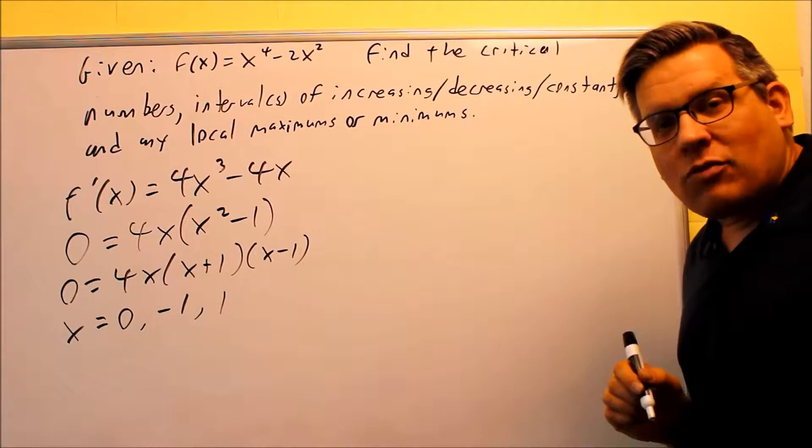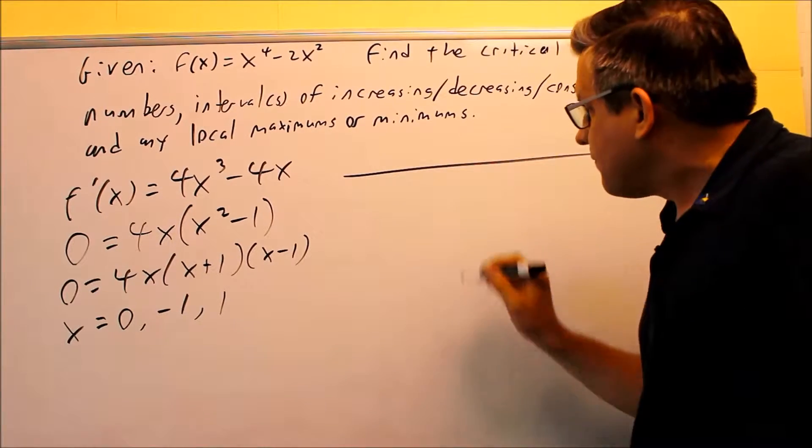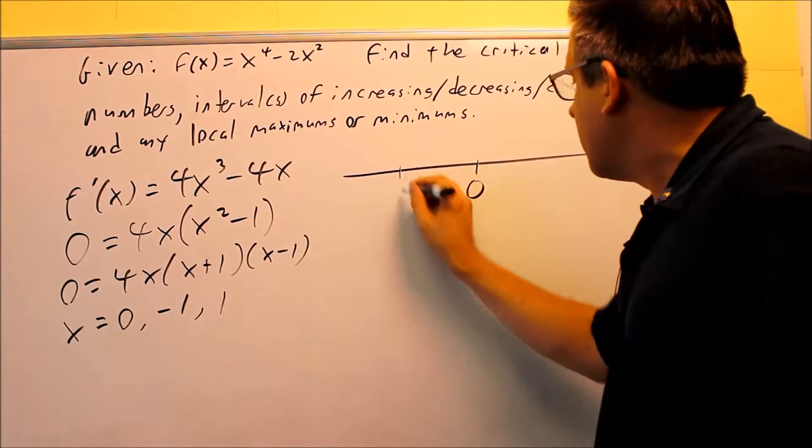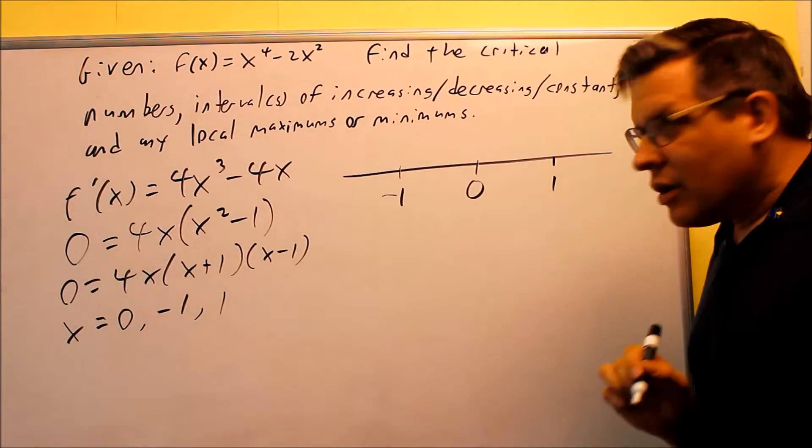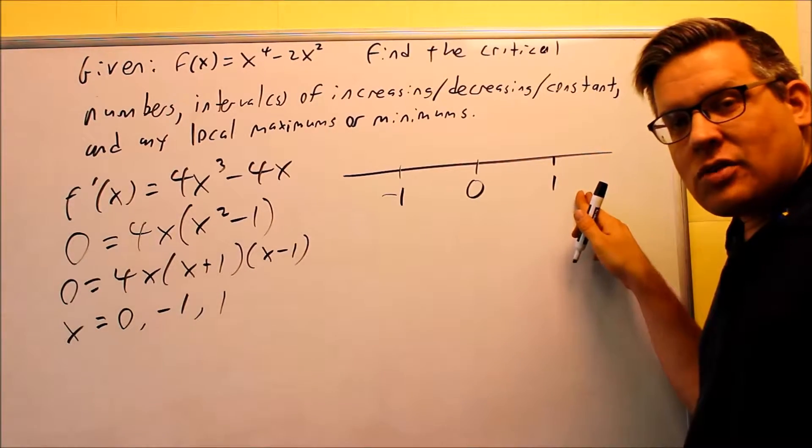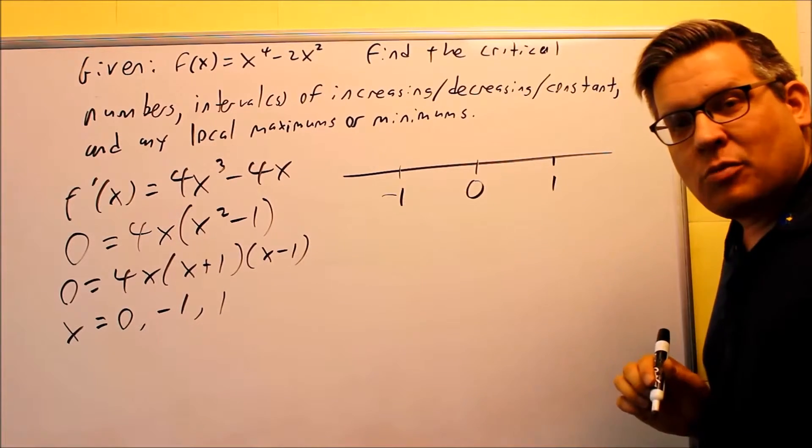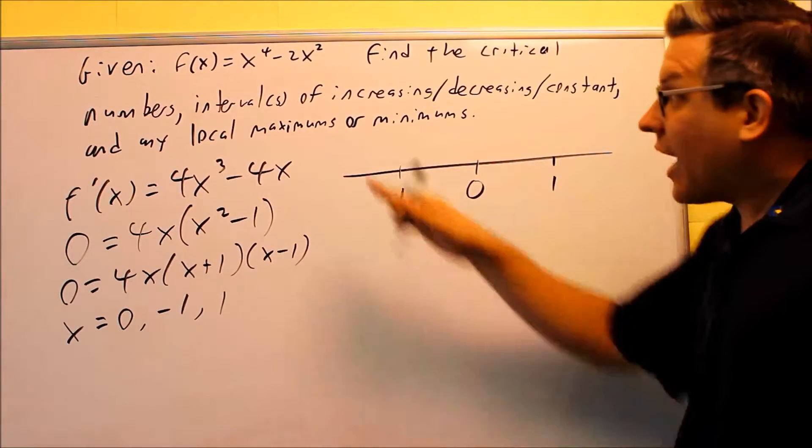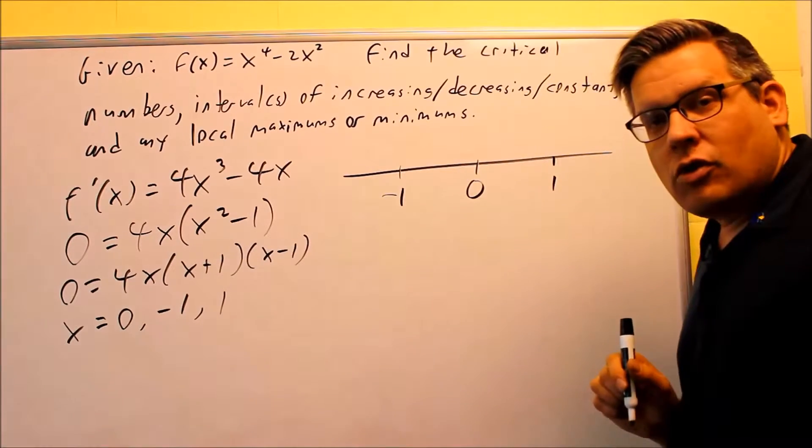Now step two is where we have to do some test points. So we're going to draw a number line, and we're going to put all of our points on there. We have zero here, negative one, and one. What you want to do is you want to test numbers in between each of these. And all you're doing is you just want to indicate whether you get a plus or a minus. Now when you pick your test numbers, you're not going to use the original function. You need to use the derivative. Why?